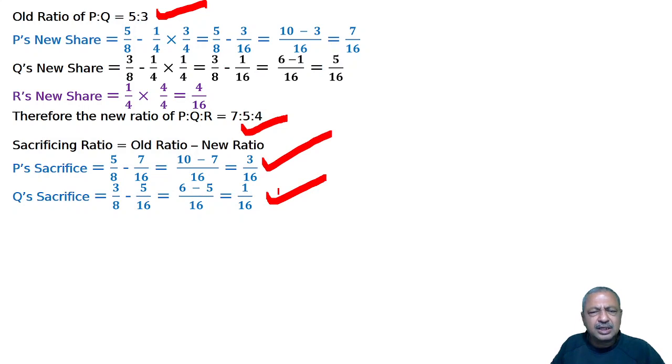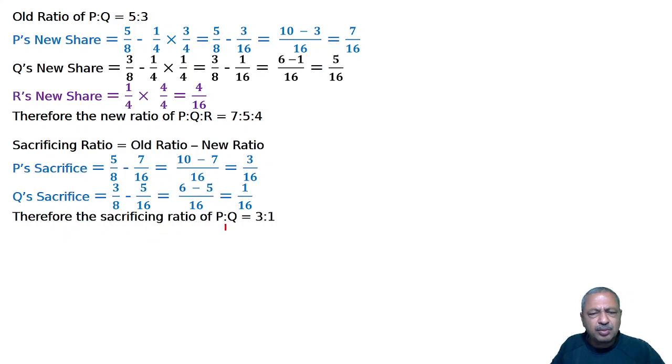P sacrifices 3 by 16, Q sacrifices 1 by 16. Comparing both ratios, the sacrificing ratio of P to Q equals 3 is to 1. Therefore, the sacrificing ratio of P to Q is 3:1.